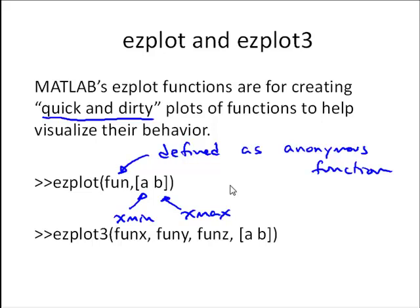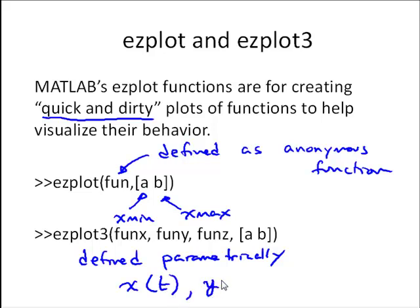EasyPlot3 is similar but in three dimensions. And in this case, the 3D function is defined parametrically. And if you haven't seen that in your math classes, basically what that means is we have the X values are defined as X of t, Y values are defined as a function Y of t, and Z values are defined as a function Z of t, and then A and B are tmin and tmax.